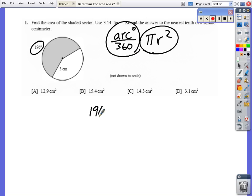In this particular case, it's 196 over 360 times πr². Thank goodness we have calculators. Notice what they give me here: 3 centimeters - that's the radius. If they gave me a diameter, I would cut it in half before putting in this formula.